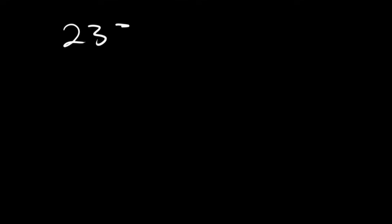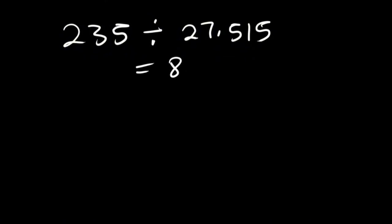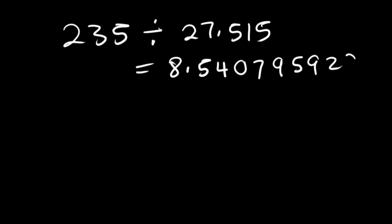Let's try division. Division is just the same — you just divide and then you check the number of significant figures. For example, you have 235 divided by 27.515. When you divide this you'll get 8.540795929.